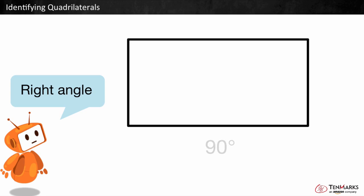A right angle is exactly 90 degrees. We can use little squares like these to show right angles.